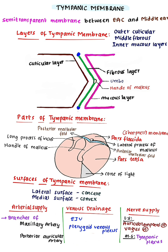Pars flaccida is thin and lax because in pars flaccida, the middle fibrous layer is replaced by loose areolar tissue.